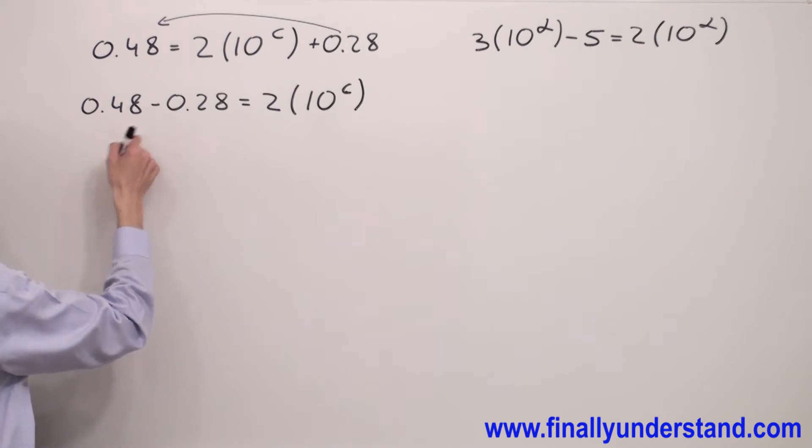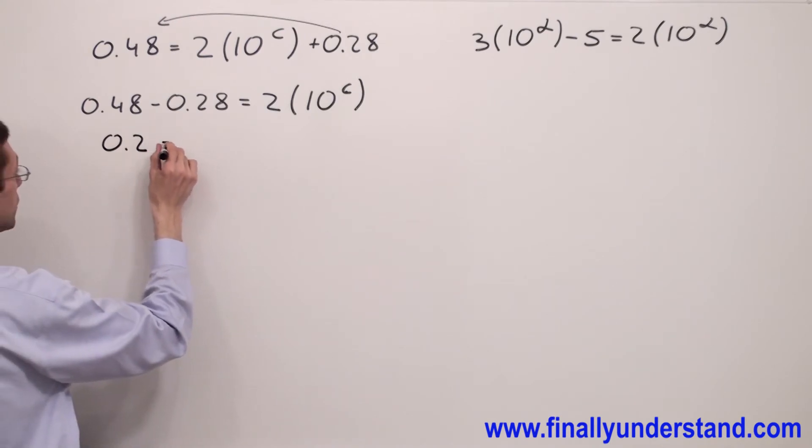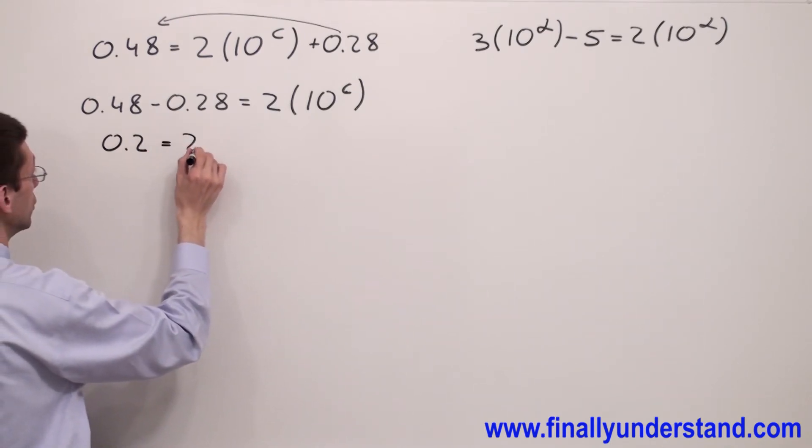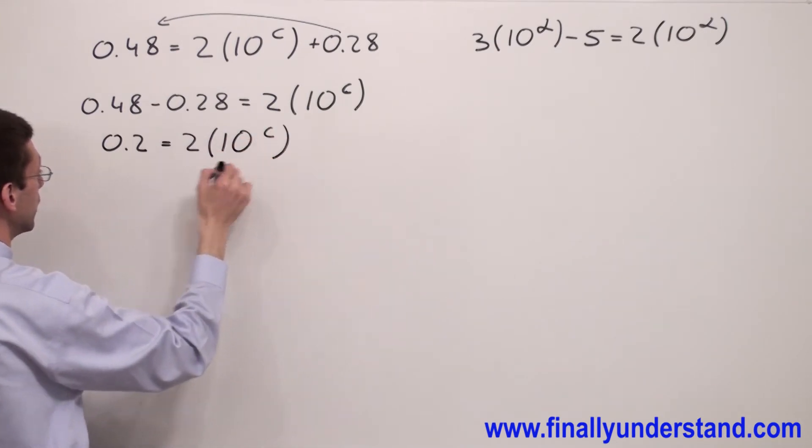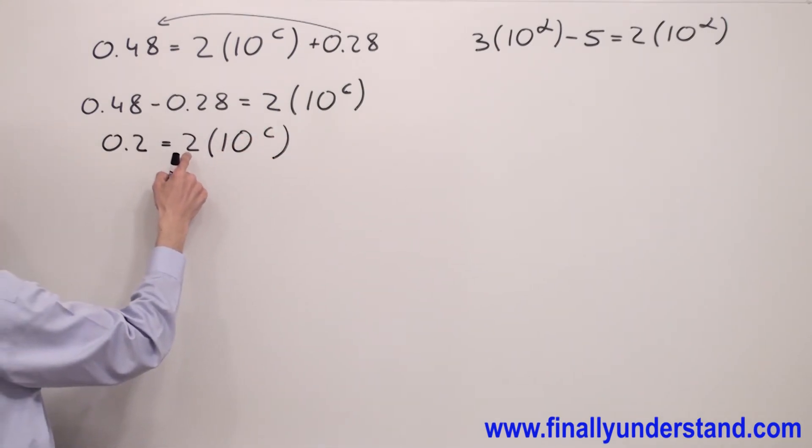0.48 minus 0.28 is 0.2 equals 2 times 10 to C. Next I have to divide both sides of the equation by whatever is multiplied to the parenthesis.